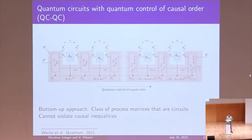You have the control here that tells you that agent K1 is supposed to act at a given point, and this is how you get the indefinite causal order. It turns out that these QCQCs cannot violate causal inequalities, which makes an interesting question: are these all the physical process matrices?